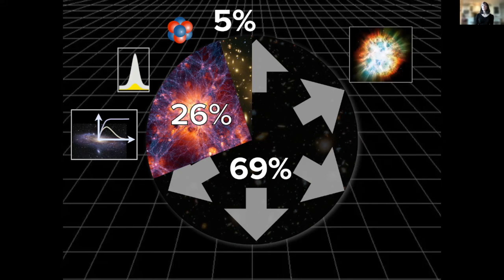69 percent is this stuff that we call dark energy. We see this from observations of those supernovae, which show us that the expansion rate of the universe is increasing with time. The universe is accelerating.